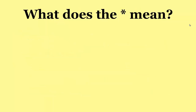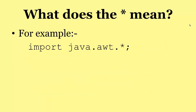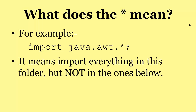But what does that star mean? You've seen the star a lot — for example, import java.awt.*. It means that you import everything in this folder, but you don't import anything in the folders below. So if this particular folder includes, say, three or four classes, then those three or four classes are now available in your Java program. If java.awt includes subfolders, what's in those subfolders will not be available to you — you have to specify those folders again.